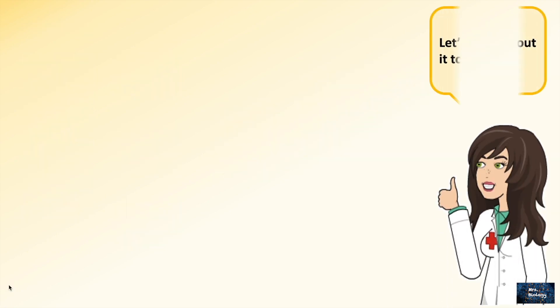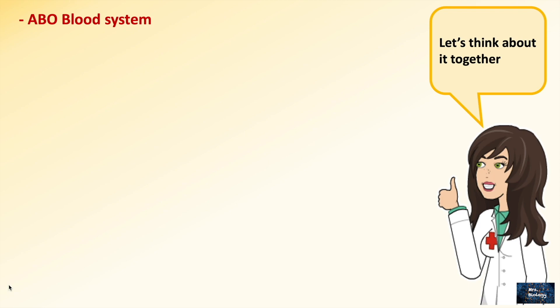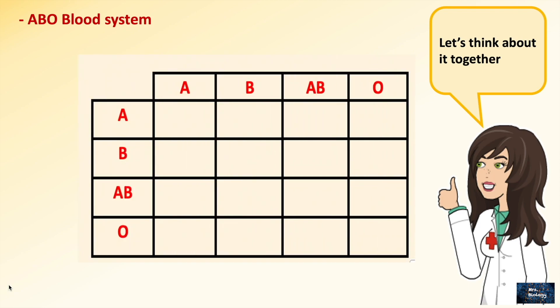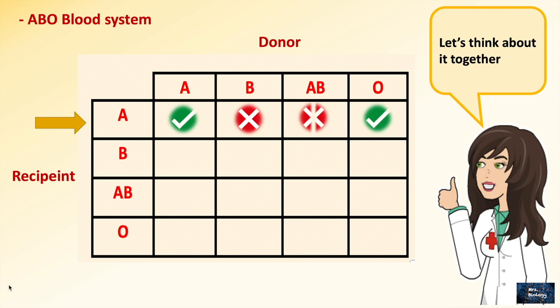We will think about it together using the ABO blood system by drawing a table. The top row represents the blood type of the donor; the left column represents the recipient blood type. Starting from the top, a recipient of blood group A can receive from A and O only, but cannot receive from blood type B or AB, because the B antigen is not found in blood type A.